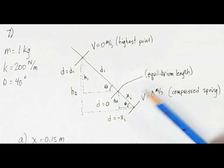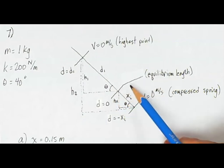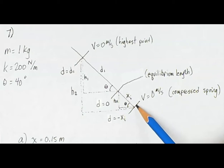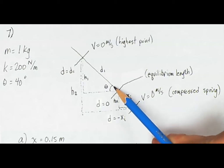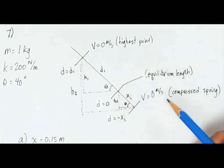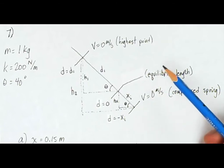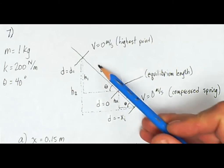Here's my diagram of what's going on. Here's the relaxed length of the spring at this location, also called the equilibrium length. I'm going to compress the spring some distance x-initial and let it go. It'll push the block up the ramp. The block will leave the spring at the relaxed length, and it will travel up to some distance d above the release point. The question is asking for the distance the block goes beyond the equilibrium length of the spring.